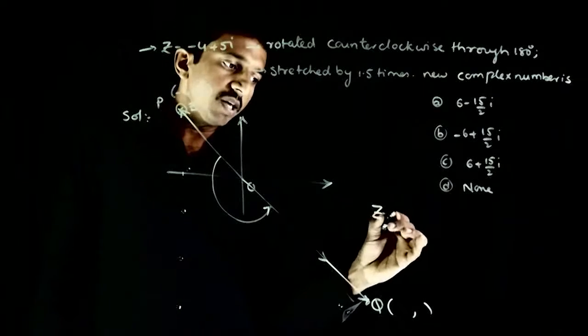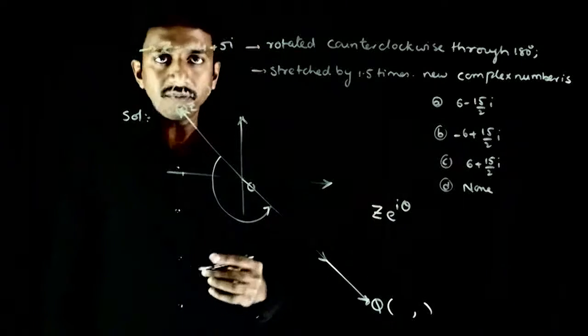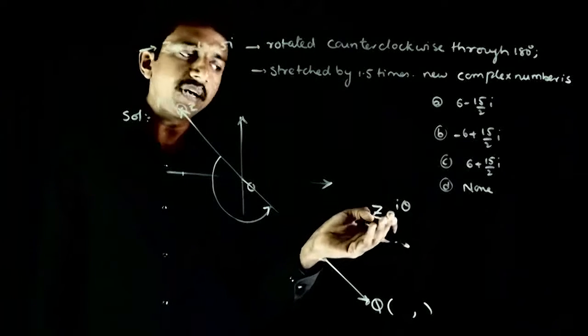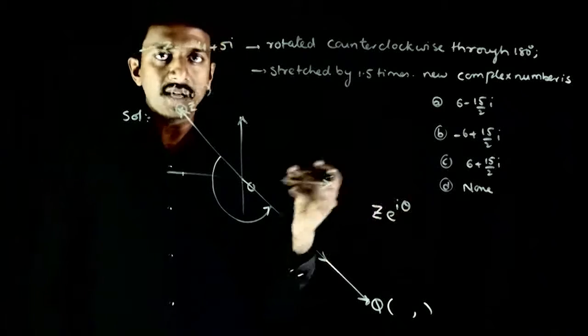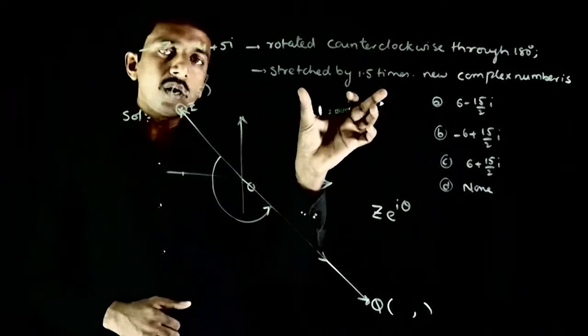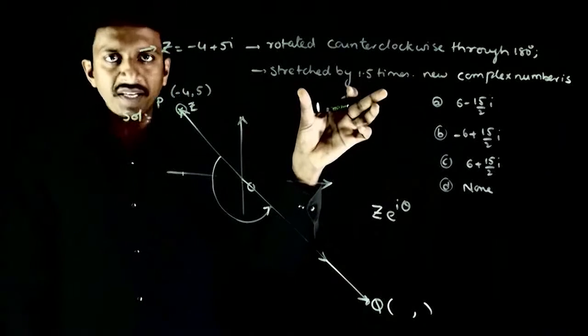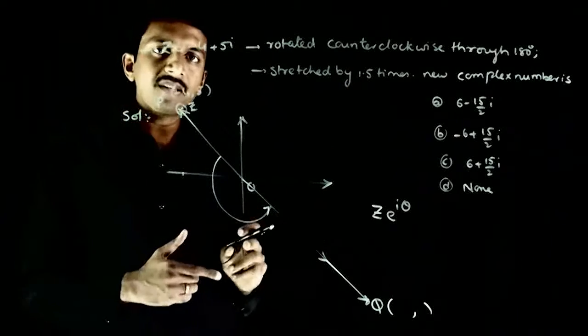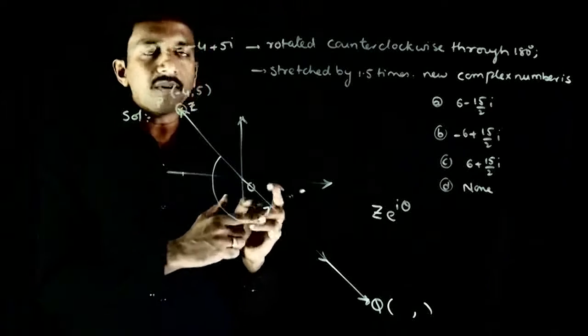So if you multiply z by e^(iθ), this z will get rotated in the counterclockwise direction through an angle of theta. And if you want to increase the magnitude by 1.5 times, you just need to multiply the complex number by 1.5.